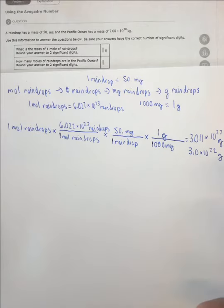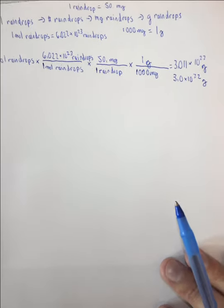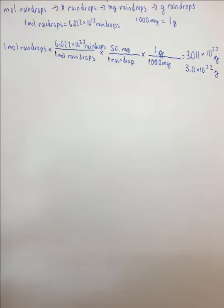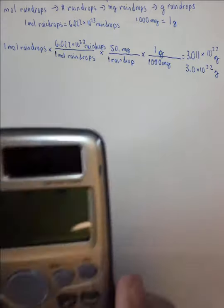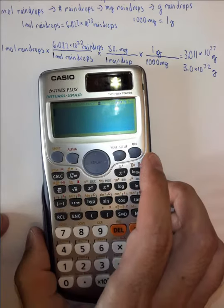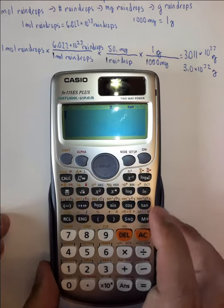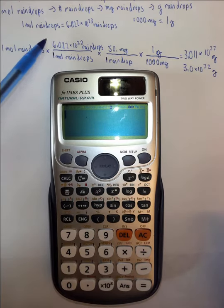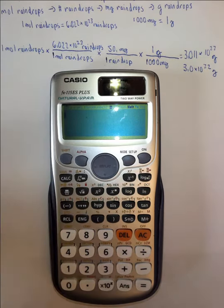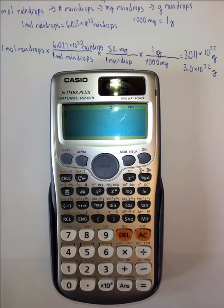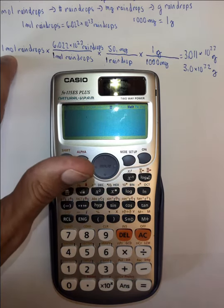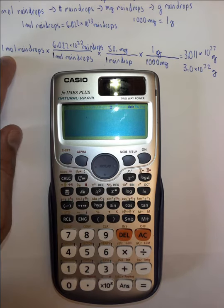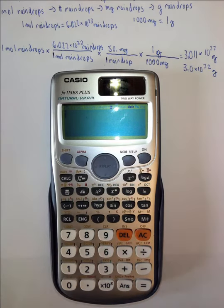I want to show you how to actually type this in on the calculator, using two different brands. On the Casio calculator, you multiply by the tops and divide by the bottoms — if they're 1 you don't need to bother. So here we can just do 1 times 6.022 times 10 to the 23. When you have scientific notation on a Casio, you type 6.022, hit the 10-to-the-x button, and then type 23.